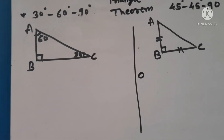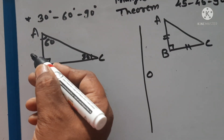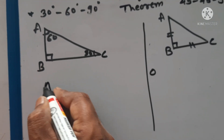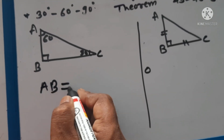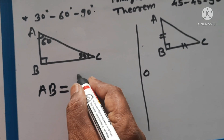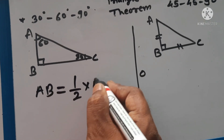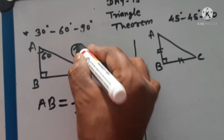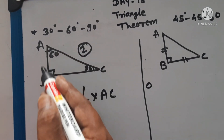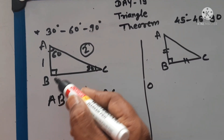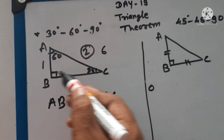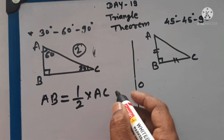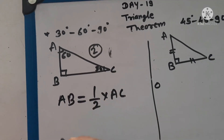In that theorem, the opposite side of the 30 degree angle — which is AB — is equal to half of the hypotenuse. Half into AC. If the hypotenuse is 2, then AB will be 1. If hypotenuse is 6, then AB will be 3. So the opposite side of the 30 degree angle is half of the hypotenuse.